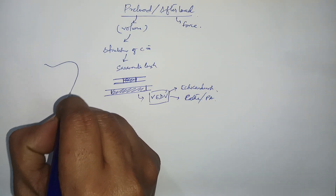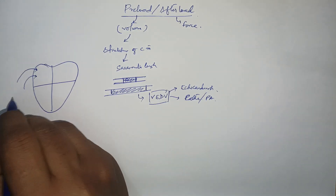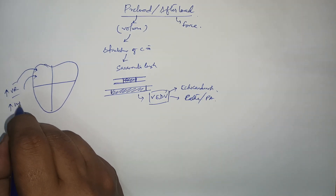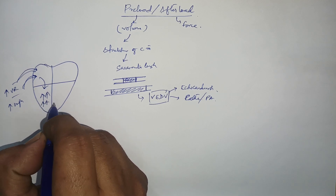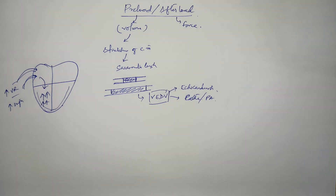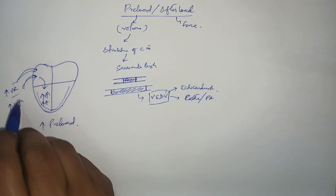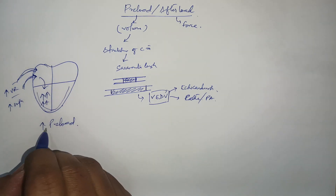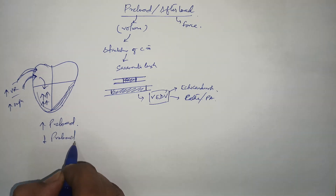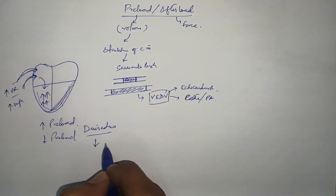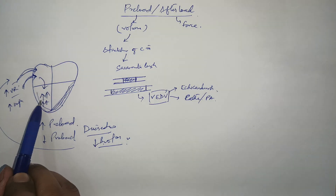Preload relates to venous return to the right atrium. Whenever there is an increase in venous return, say in case of IV infusion, preload will be more — it will create more volume in the ventricles, so there will be more stretching of the ventricular wall, meaning more preload. Conversely, when venous return is reduced, such as with diuretics like furosemide, blood volume decreases, venous return to the heart is reduced, and hence there is a reduction in preload.